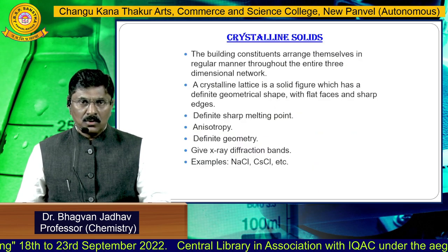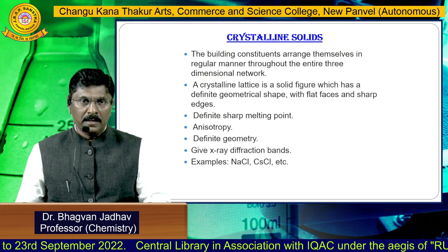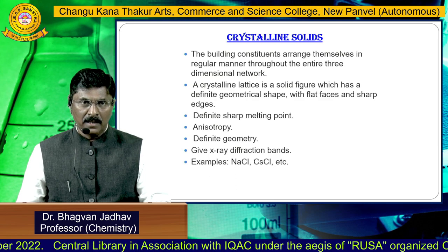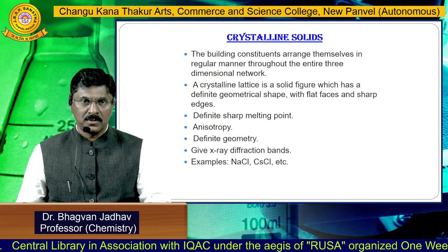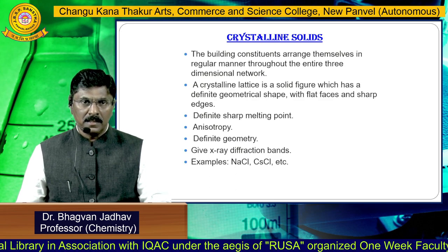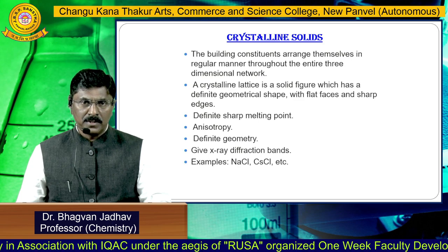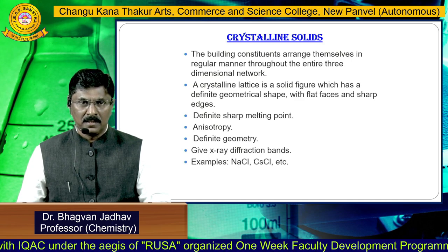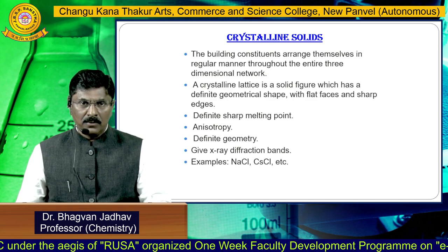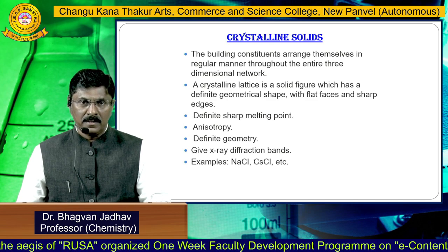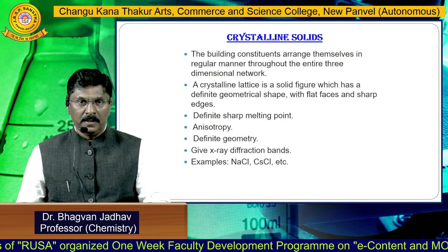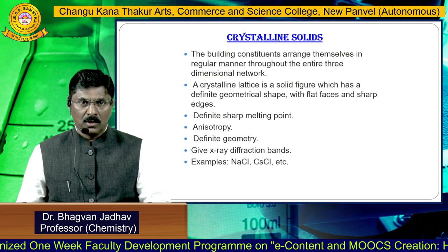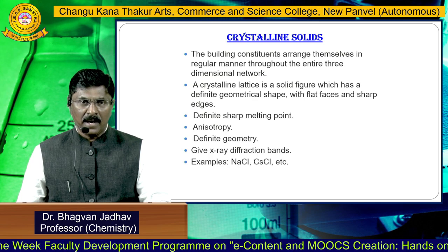In crystalline solids, the binding constituents arrange themselves in a regular manner throughout the entire three-dimensional network. A crystalline lattice is a solid figure which has a definite geometrical shape with flat faces and sharp edges. Crystalline solids have definite sharp melting points. They show anisotropy and there is a definite geometry, and crystalline solids give X-ray diffraction bands.